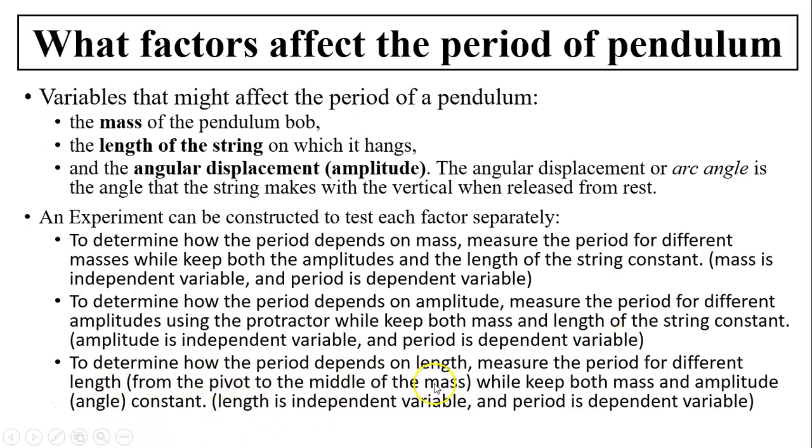To determine how the period depends on length, we only measure the period for different lengths. How do we measure the length? Length from the pivot, from the top of the string to the middle of the mass. That's the length of the pendulum. Keep both the mass and amplitude constant. So in this case, length is the independent variable while period is the dependent variable.